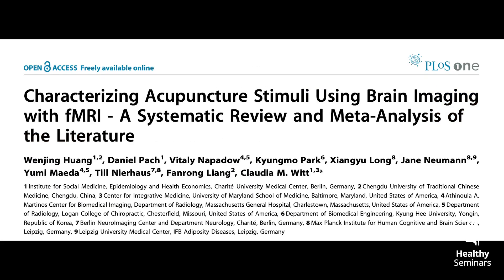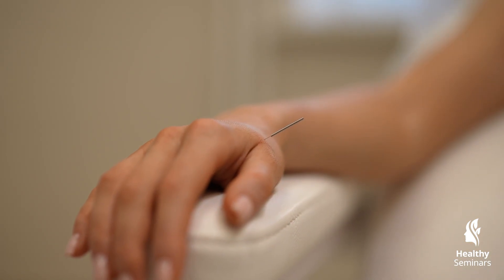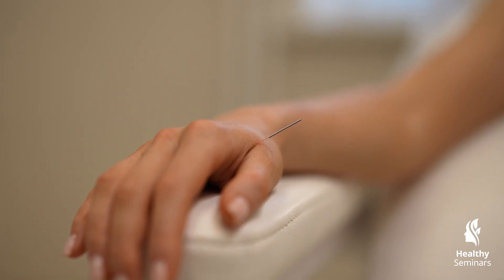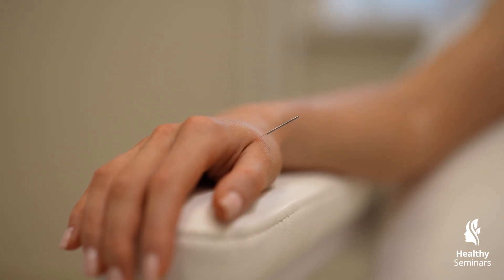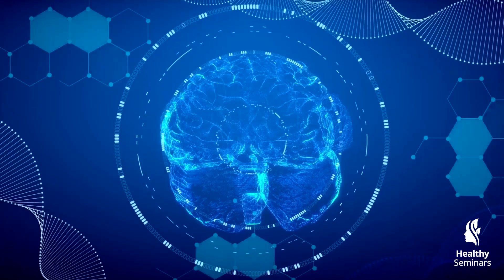Additionally, fMRI studies show that Qi arrival stimulates the anterior cingulate cortex, hypothalamus, and insula — regions involved in pain perception, autonomic regulation, and emotional processing. This suggests that acupuncture's effects extend beyond local stimulation, influencing higher brain centers that regulate the body's overall response to pain and stress.